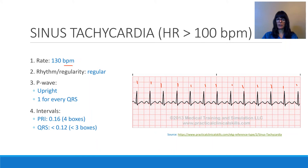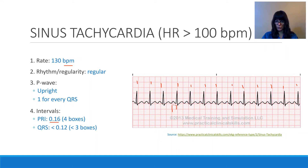Looking at rhythm regularity, it looks pretty regular — I would march it out with my calipers or EKG paper method to confirm. The P wave — is there one for every QRS and is it upright? Certainly, looking at all the P waves and QRSs, that applies. Looking at my intervals: I find one starting at a thicker line, count 1, 2, 3, 4 small boxes — the PRI is 0.16 seconds. The QRS is 1, 2 boxes apart, which is 0.08 seconds, less than 0.12. The impulse is coming from the sinus node, but it's tachycardic — this is sinus tachycardia.